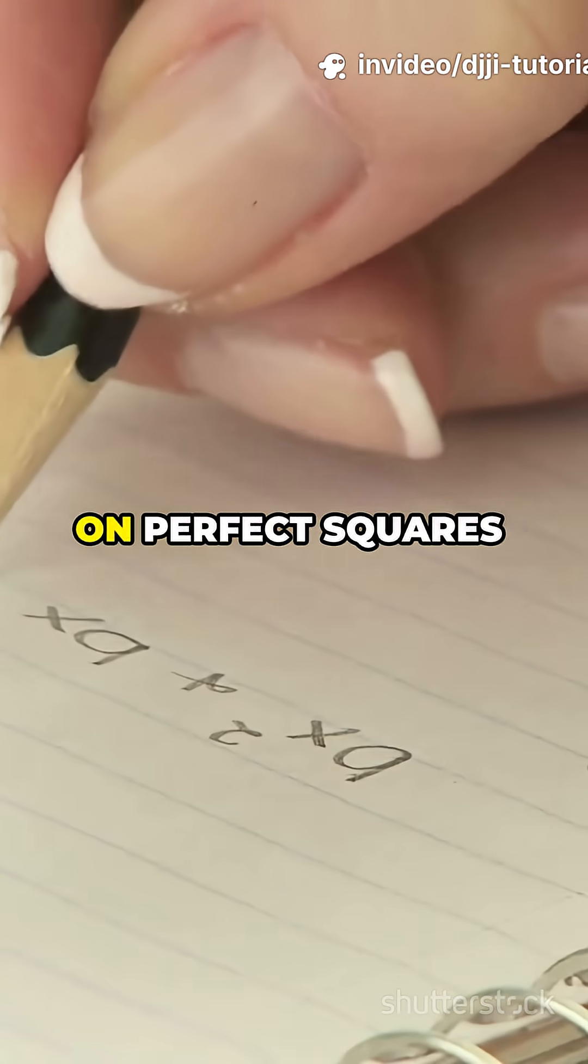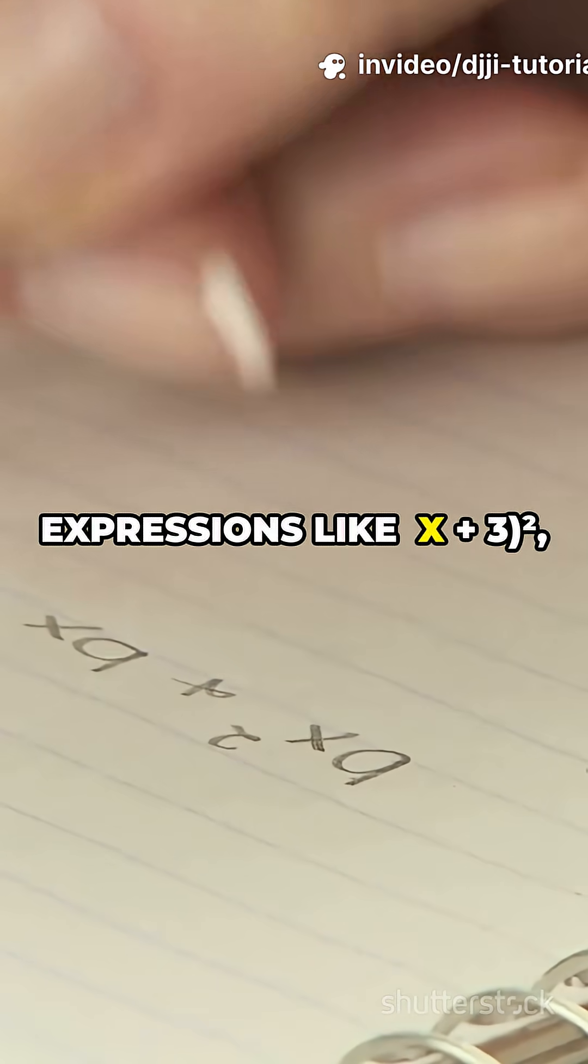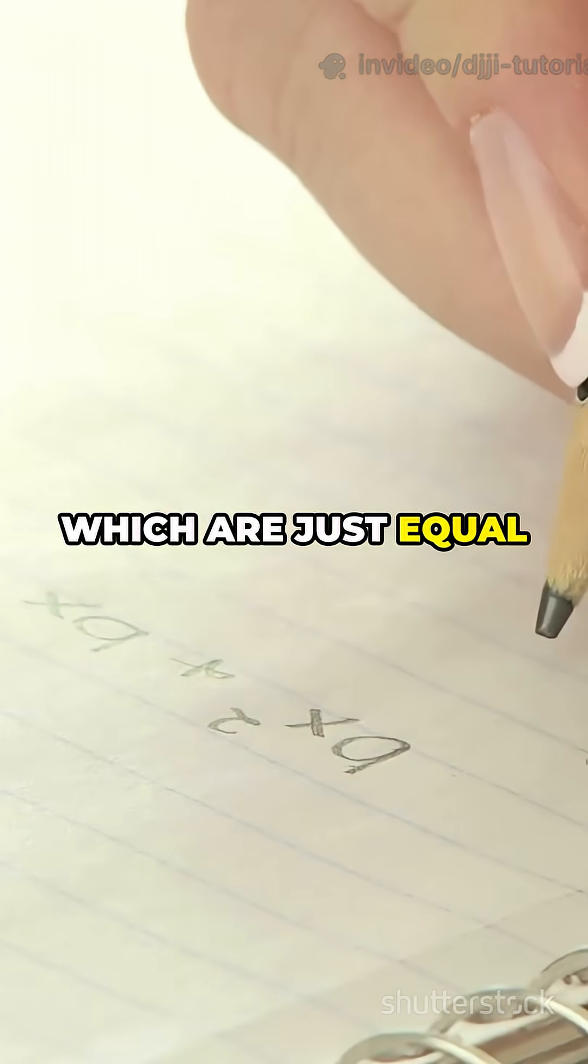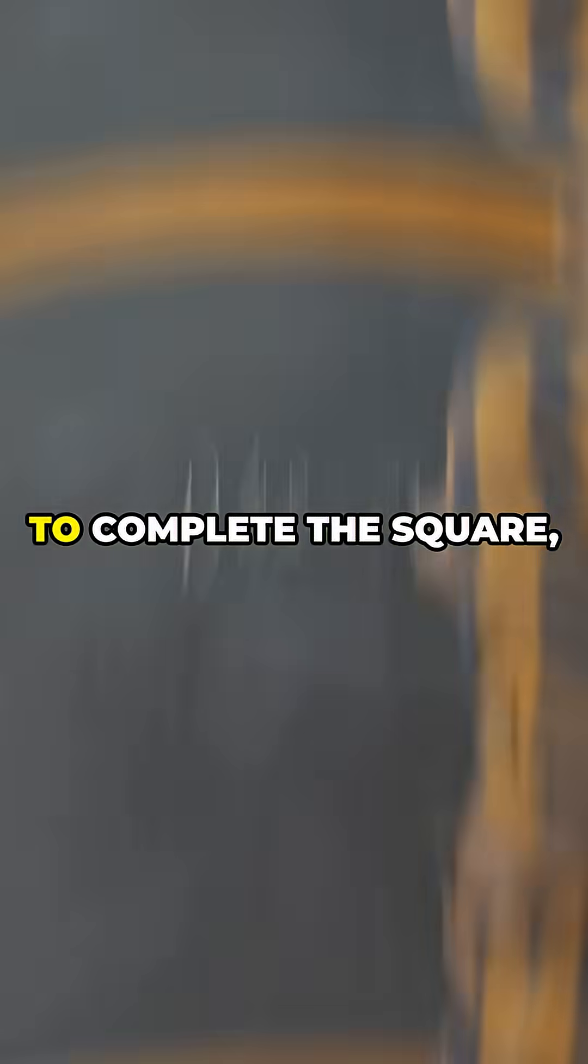Why? Because it's built on perfect squares, expressions like (x + 3)², which are just equal factors multiplied together.